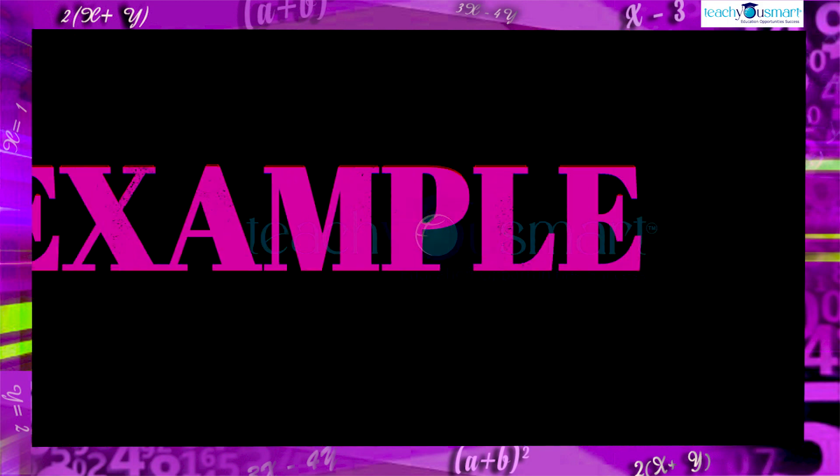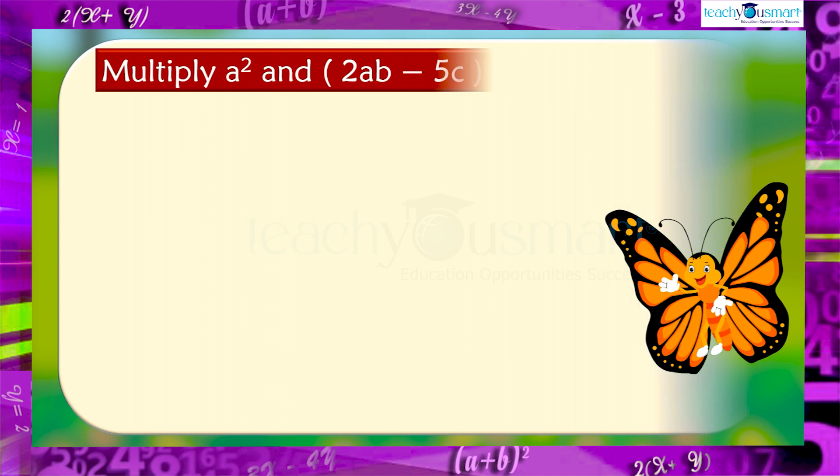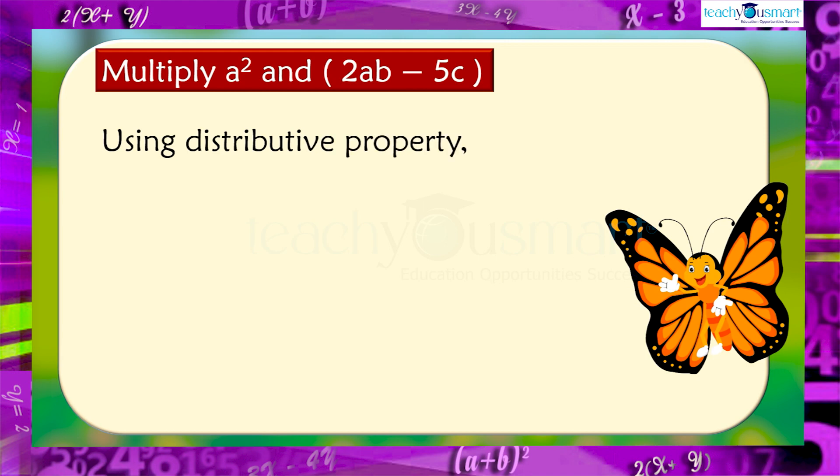Take another example. Multiplying a² and 2ab minus 5c using distributive property. a² multiplied by 2ab minus 5c equals a² multiplied by 2ab minus a² multiplied by 5c equals 2a³b minus 5a²c.